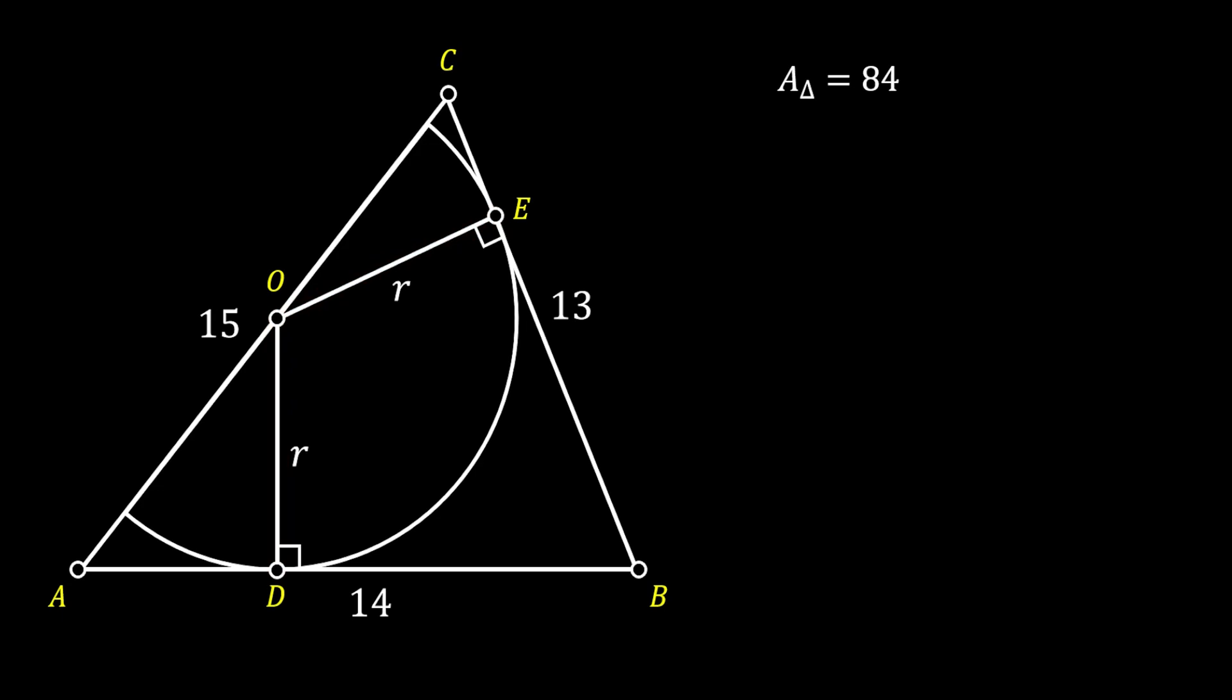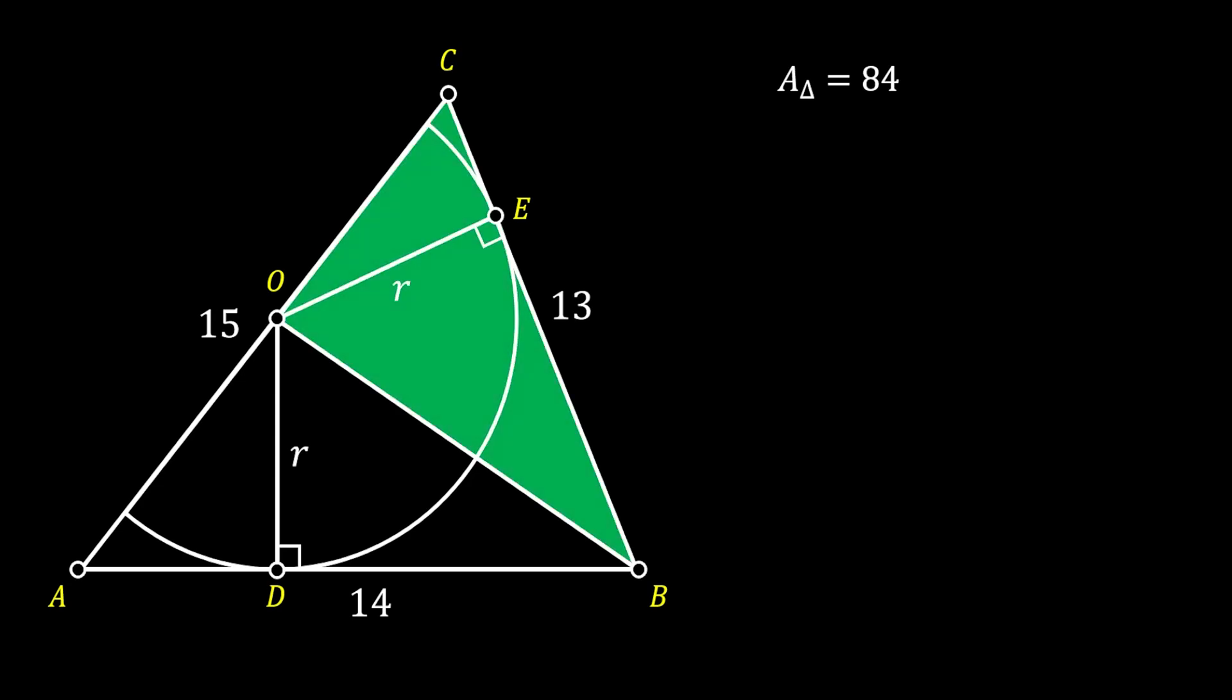Alright, so now we will pull another line, this time from the point O to the point B. You can notice that this line will divide our big triangle into two separate triangles. Let's first take a look at the triangle OBC and let's find the area of this triangle.